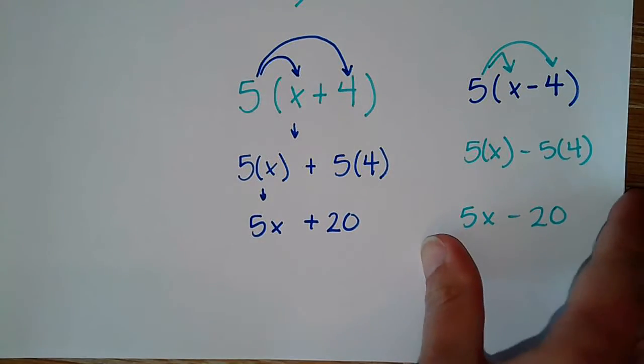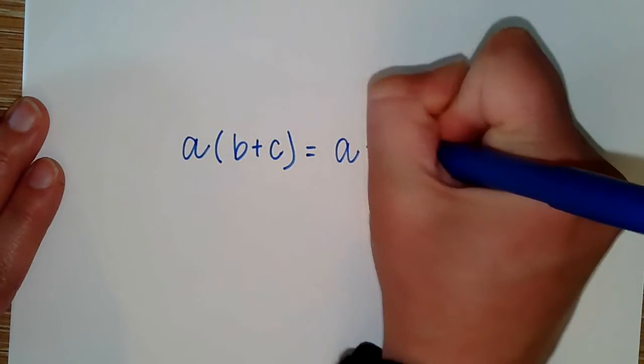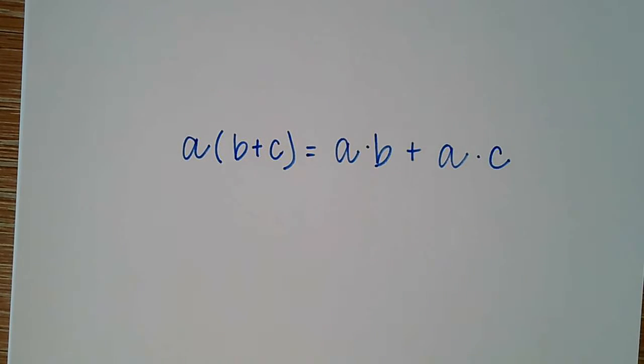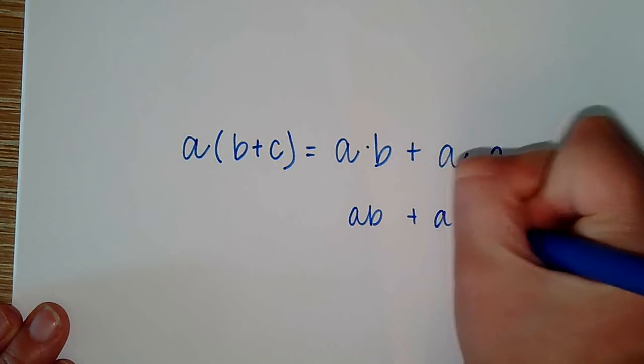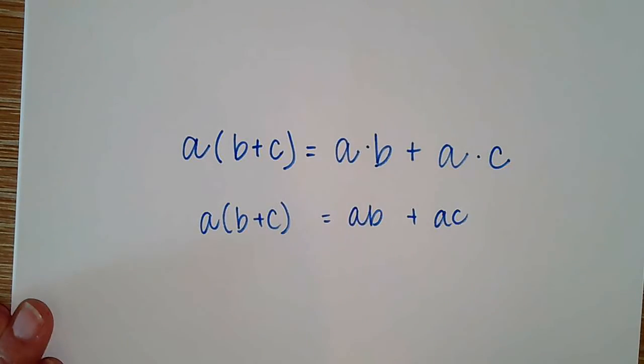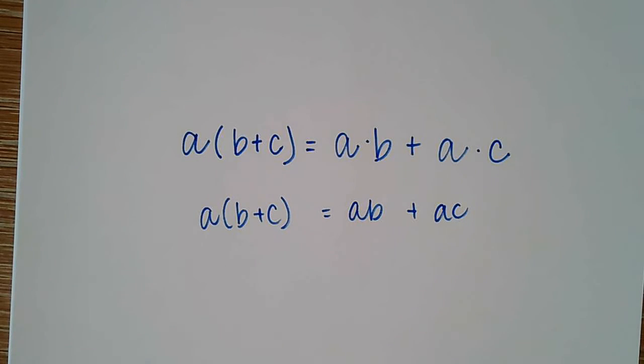Sometimes we can look at this algebraically. We will see it like this: a times b plus c equals a times b plus a times c. This tells us we can multiply that a to each term individually to simplify it down.